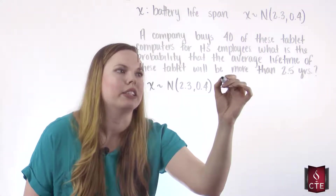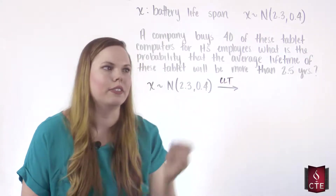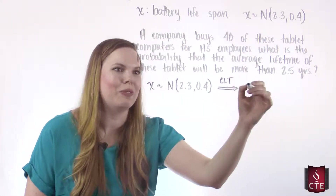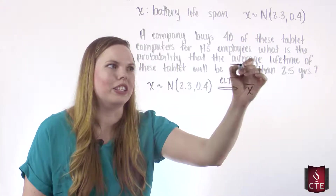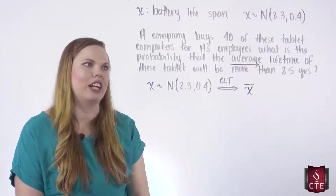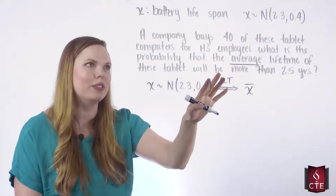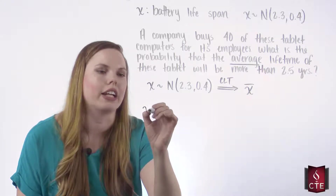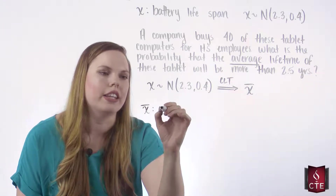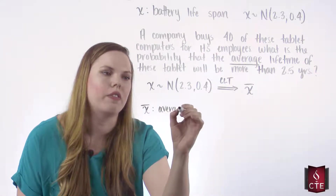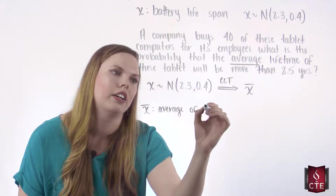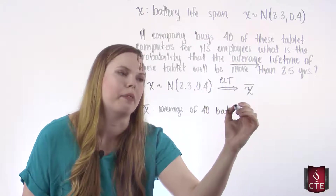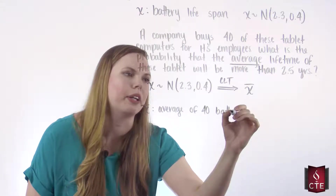So the central limit theorem — CLT — tells us that X-bar, the average, is what we care about because we're looking for the average lifetime. In this question we're not asking about X, the battery lifespan of one device. We're looking at X-bar as our variable: the average of 40 batteries or 40 of these tablet computers.